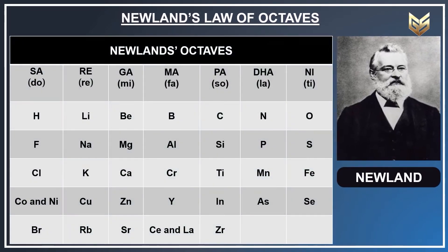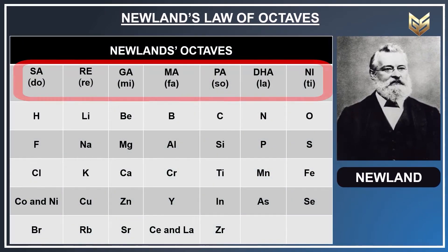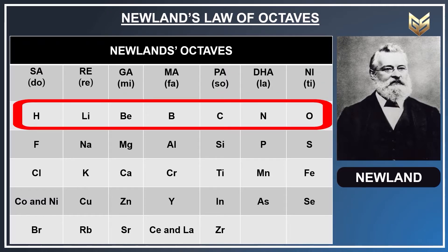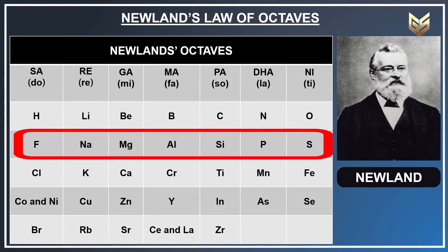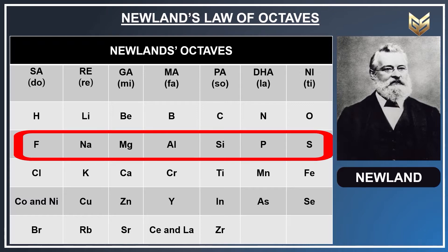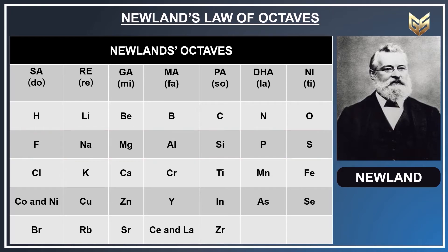You can see in this table the musical notes are given. Similarly, hydrogen, lithium, beryllium, boron, carbon, nitrogen, oxygen — then fluorine comes under the group of Sa. Then fluorine, sodium, magnesium, sulfur, and chlorine comes under the group S. So you can see that after every eighth element the property is being repeated, and hence elements are placed in the same group.